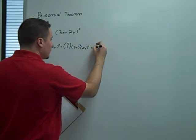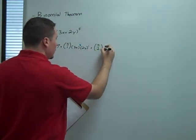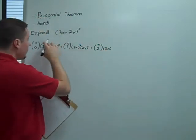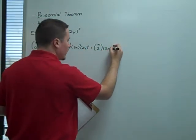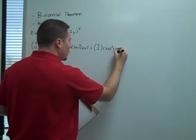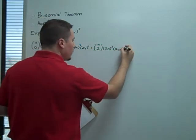Then for the next term, I'm going to have 5 choose 2 times 3x, this time 5th, 4th, 3rd, and notice again that 3rd is 5 minus 2. Then 2y. Again, we're just copying this number, squared.